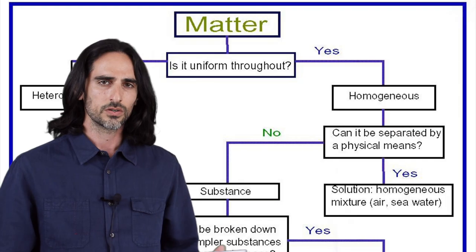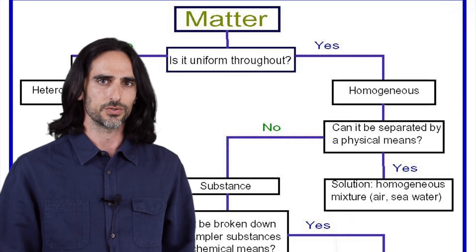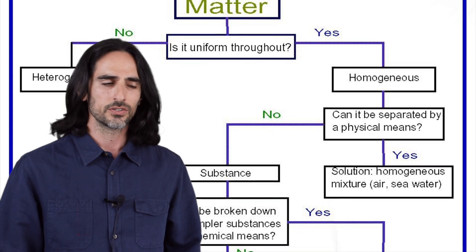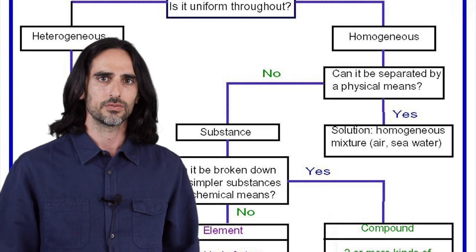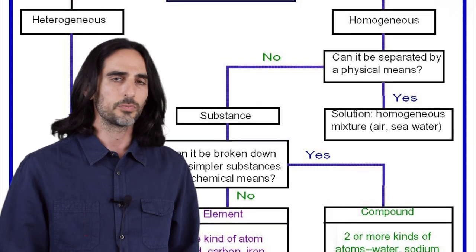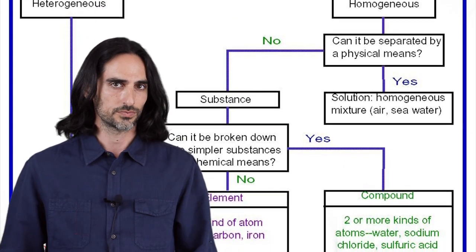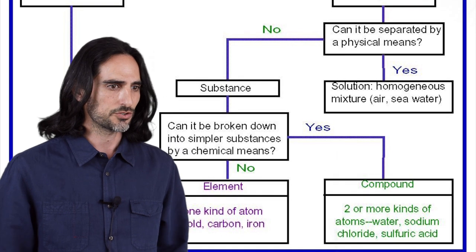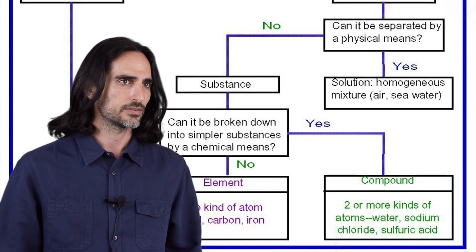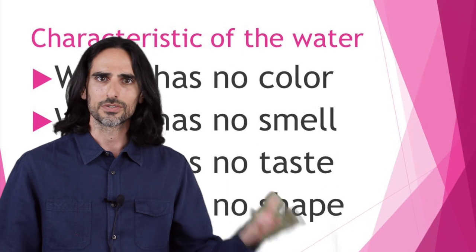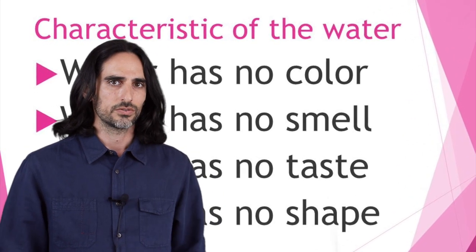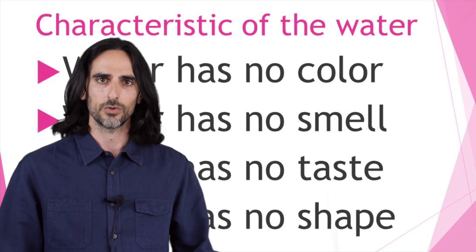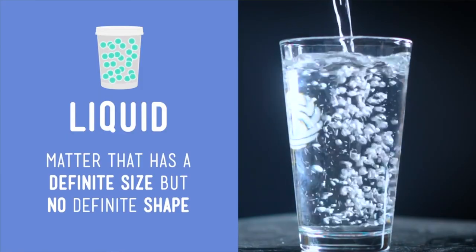We know some of the most common and useful properties that we can put a value or number on, like length, width, height, volume, and weight. When I look at the categories we use for matter, it's evident that most of the ways we measure matter do not apply to water — whether we talk about shape, form, taste, color, or smell — none of those register with water.